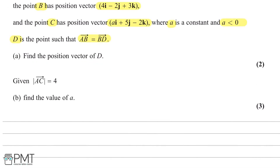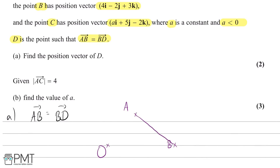We need to find the position vector of D. The first thing we can do is use the information that AB equals BD, as this is the only knowledge we have of what D could be. We need to find out what AB is. Here's a quick diagram to help visualise this. Suppose this is the origin O, this is position vector A, and this is position vector B. We want to get from A to B. We can express this as going from A to O and then from O to B.